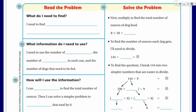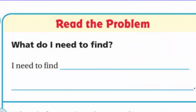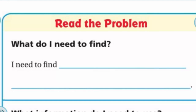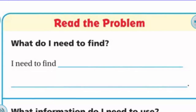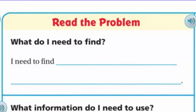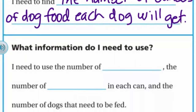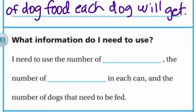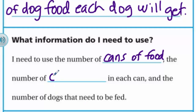Let's look at the graphic organizer. It says 'Read the problem — what do I need to find?' I need to find the number of ounces of dog food that each dog will get. The next question: what information do I need to use? I need to use the number of cans of food, the number of ounces in each can, and the number of dogs that need to be fed.